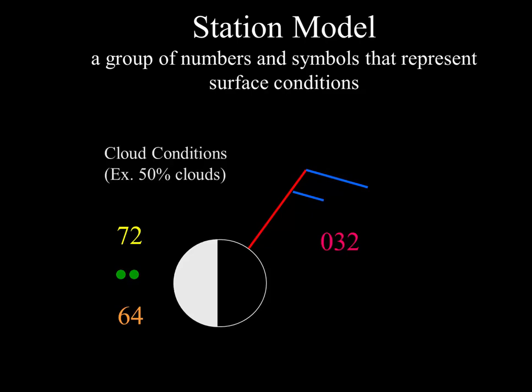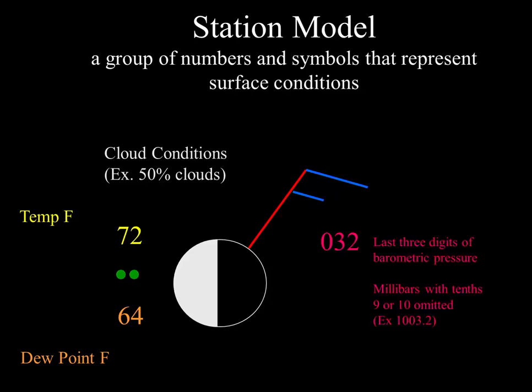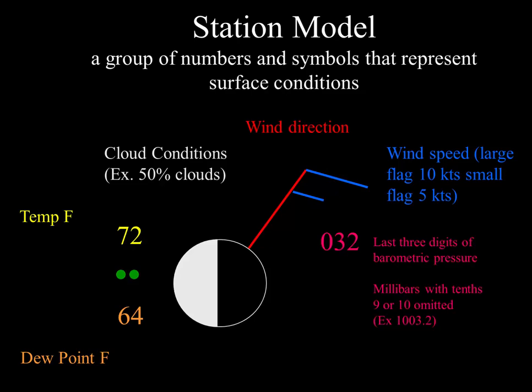It may be easier to color code this to explain the different numbers and parts of the diagram. The circle in the center represents sky conditions — if it's cloudy, the circle would be fully colored in; 50% clouds, halfway; 25% cloudy, only a quarter colored in, and so on. The number in the upper left represents temperature, and the number in the lower left represents dew point. On the right, we'll see a few numbers that are the last three digits of barometric pressure measured in millibars — the 9 or 10 that precedes these numbers has been omitted. So a number like 032 would represent 1003.2 millibars. The vector coming off the circle shows us the wind direction, and the barbs at the end of that vector are wind speed.